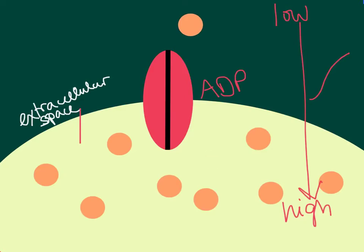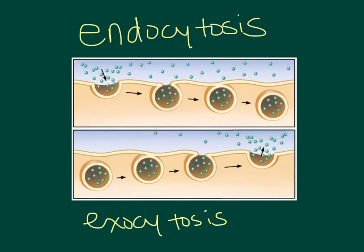Cells can also go through the opposite process of pumping things out of the cell from low to high concentration — for example, to get rid of waste products. Two other forms of active transport, which are a little bit different from what we just looked at when molecules move from low to high concentration through a membrane protein, are endocytosis and exocytosis.